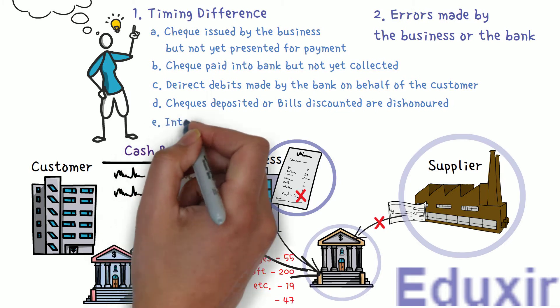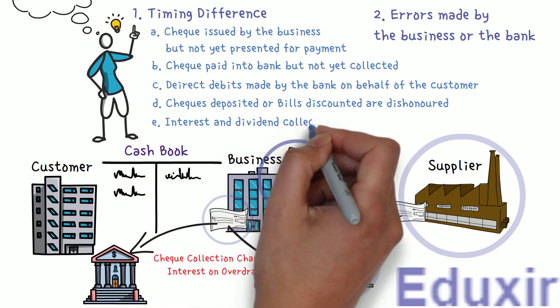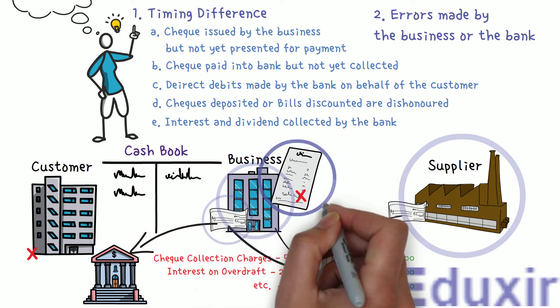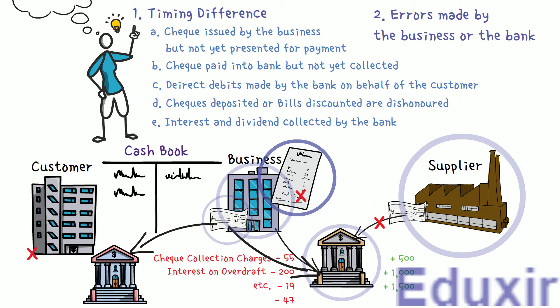The next reason is interest and dividends collected by the bank. When the bank collects interest and dividends on behalf of the customer — meaning our business — they are immediately credited to the customer's account. But the business will not know about these transactions until the bank statement is received, so there will be a difference in the cashbook balance and the bank passbook balance. To limit the scope, we will consider only these five reasons for timing difference.